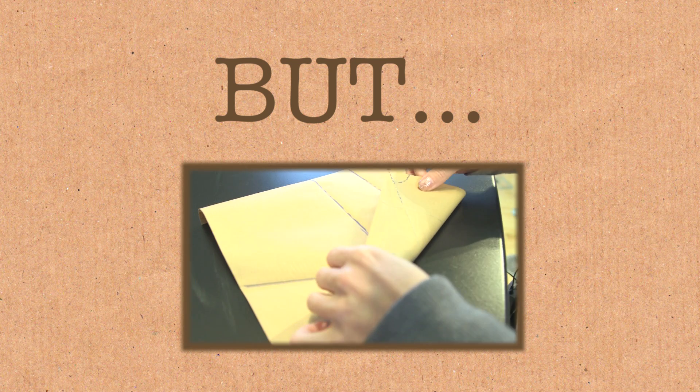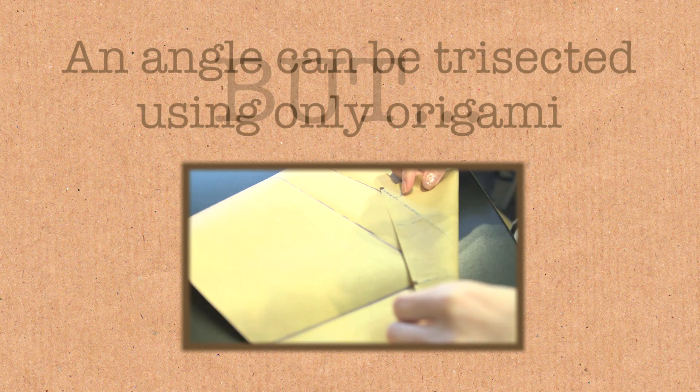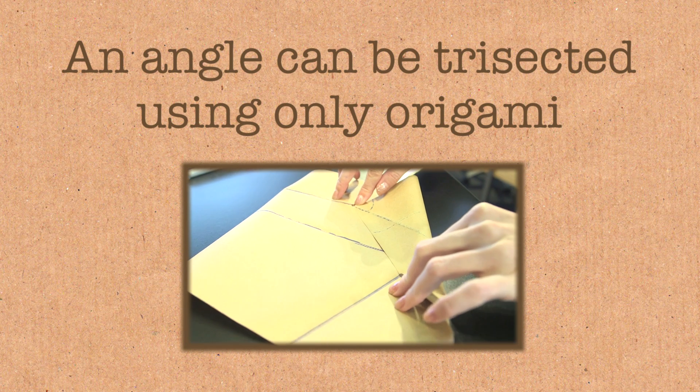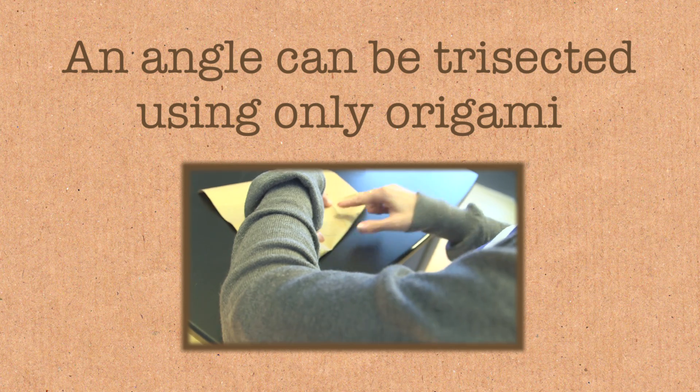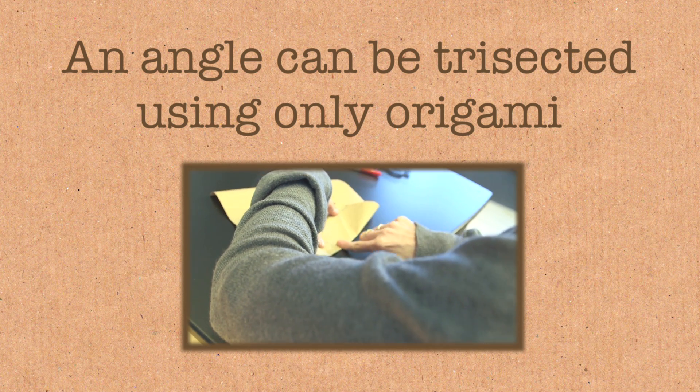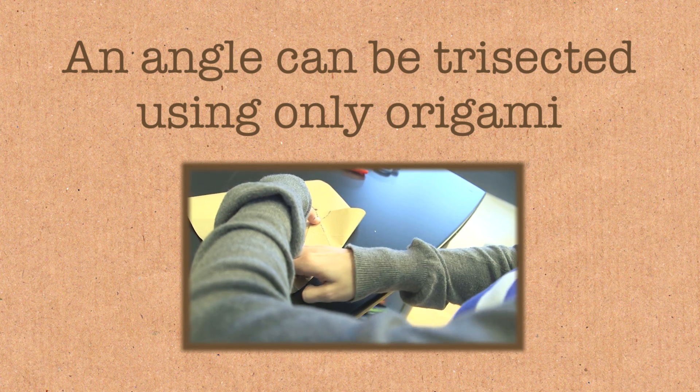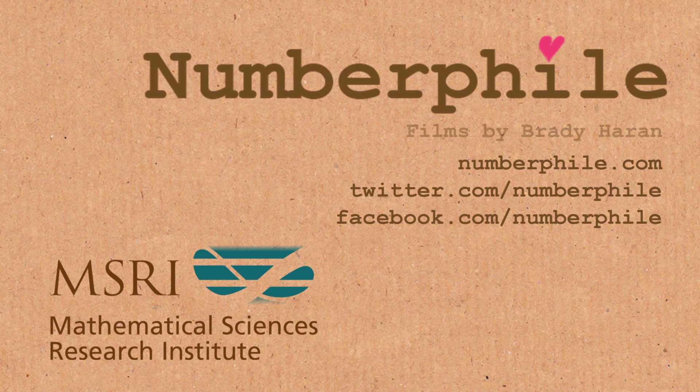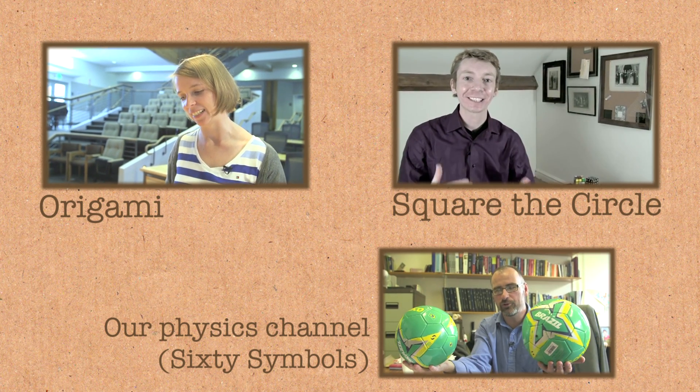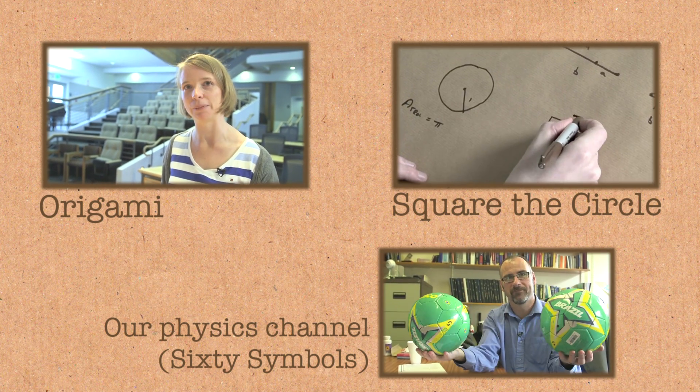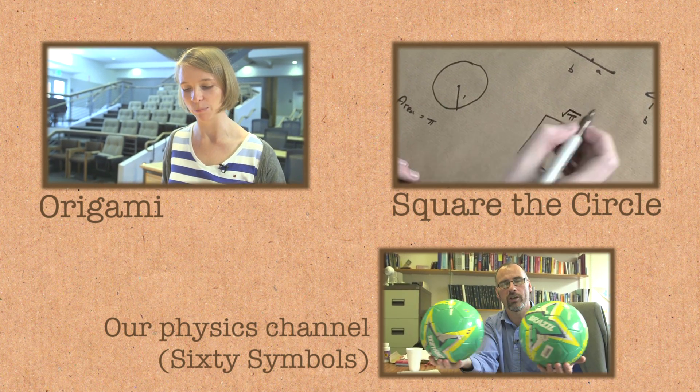I'm going to fold it and fiddle it around. Now once I found that alignment, I'm going to put my hand down and crease the line. It's much less classical and so it's less talked about - using folding paper instead of a straightedge and a compass.